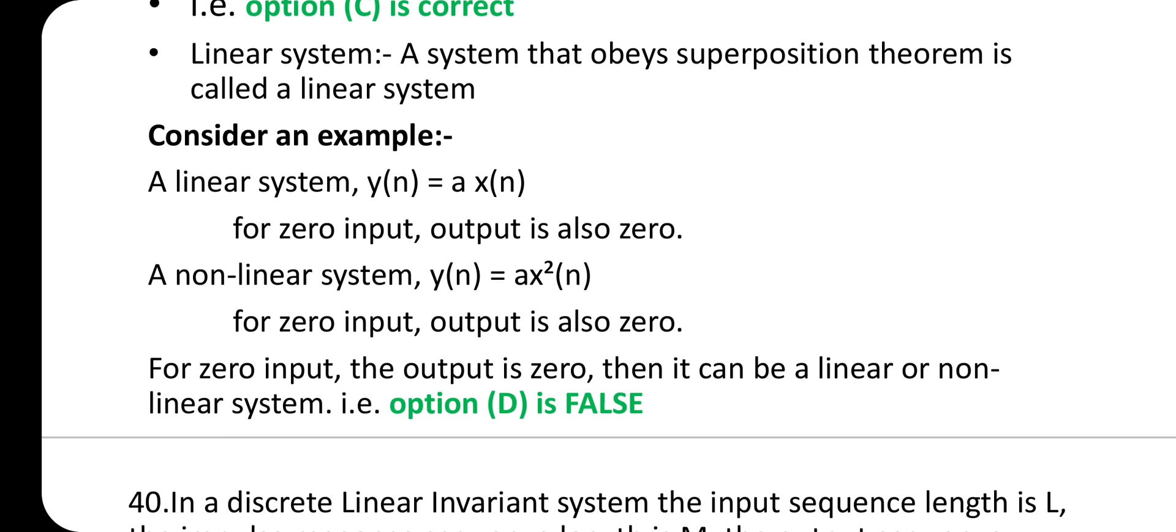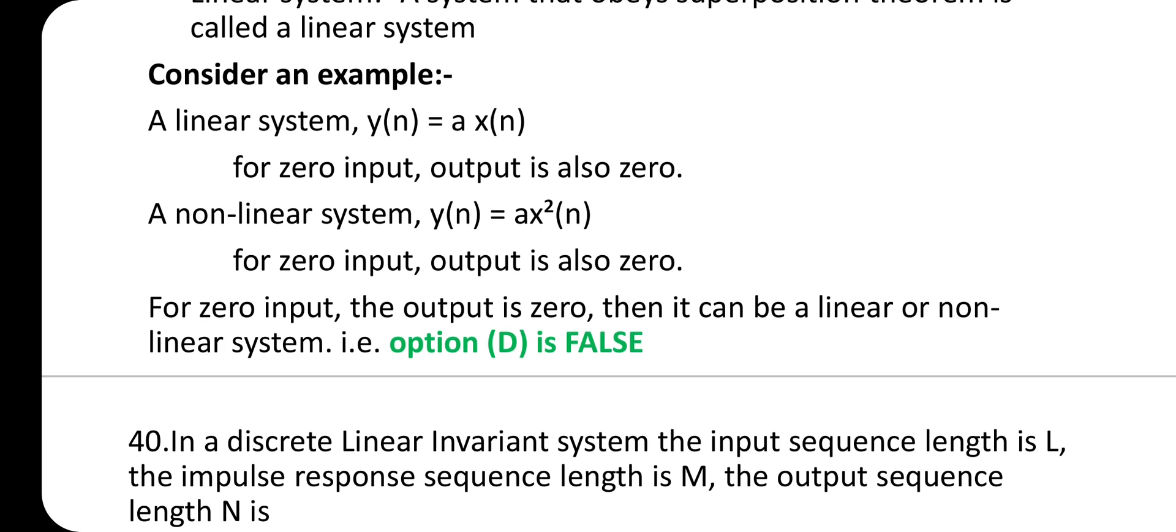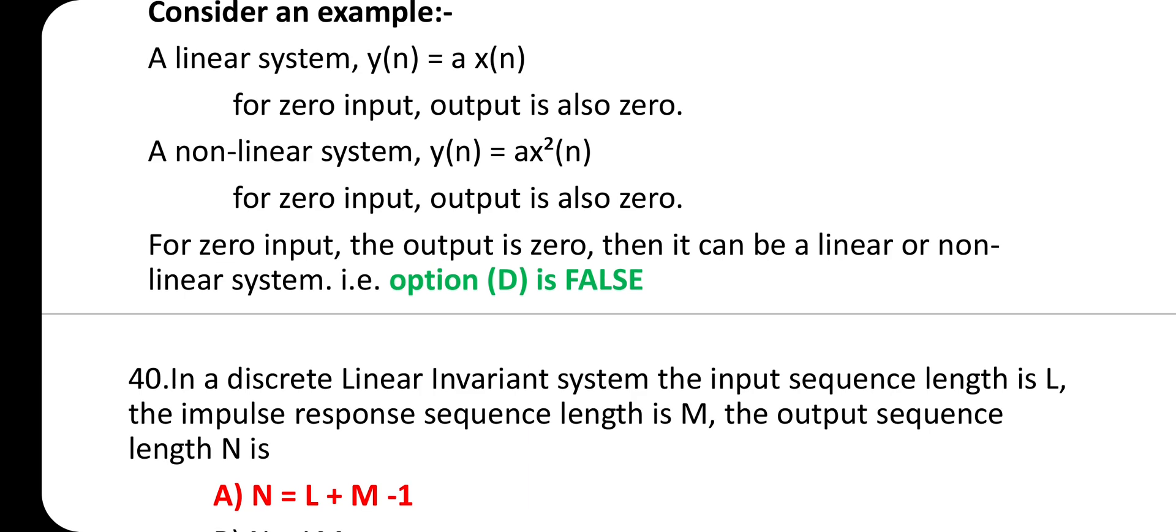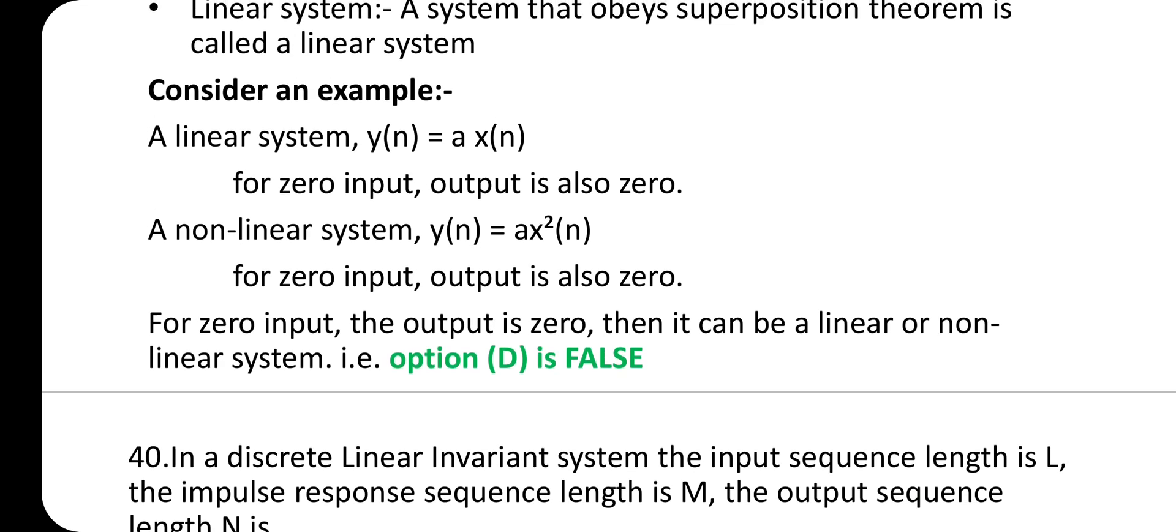Linear system: A system that obeys superposition theorem is called a linear system. Consider an example: A linear system y(n) = Ax(n). For zero input, output is also zero. A non-linear system y(n) = Ax²(n). For zero input, output is also zero here. For zero input, if output is zero, then it can be linear or non-linear system. Therefore, option D is false.